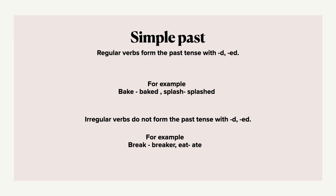Whereas irregular verbs do not form the past tense with 'd' or 'ed' at the end. For example, 'eat' becomes 'ate', 'break' becomes 'broke', and 'lie' becomes 'lay'. In simple past, when we use irregular verbs, we totally change the spellings and the sound of the verbs used.